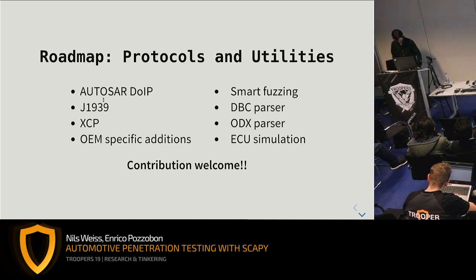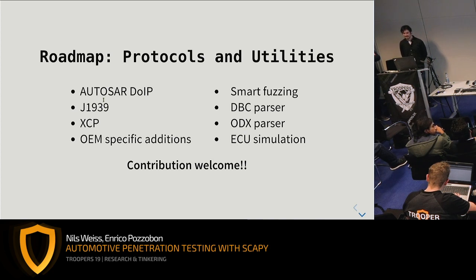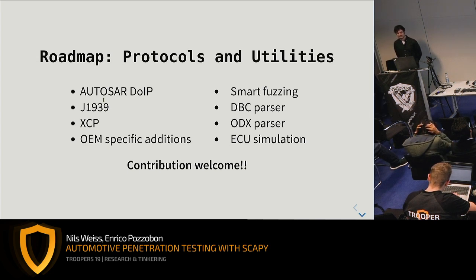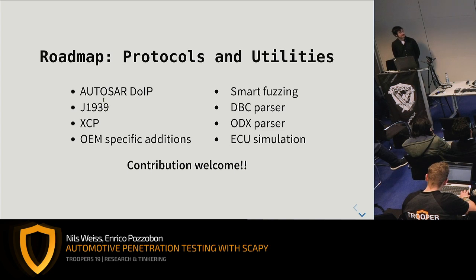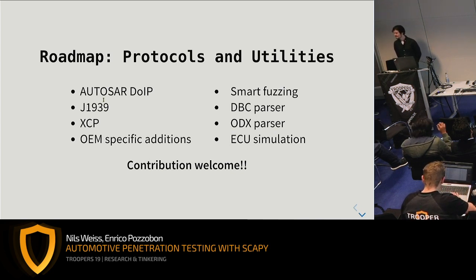This is our roadmap for the near future: we want to support AUTOSAR Diagnostic over IP, the J1939 protocol, XCP (another protocol we want to bring to Scapy), smart fuzzing using protocol information to generate smarter fuzzing possibilities, DoIP support, and maybe ODX parsing — these are automotive property protocols that label data and specify what the data means. If we can parse this stuff, it might help us a lot in the future.